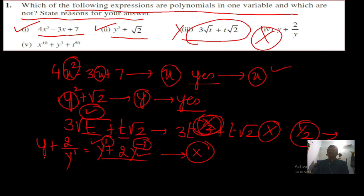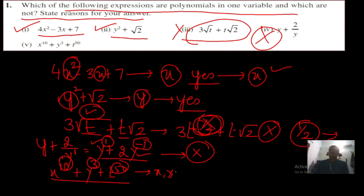The next expression is x raised to 10 plus y cubed plus t raised to 50. Yes, this is a polynomial and the degrees are all whole numbers, natural numbers. But the problem is there are 3 variables — x, y, and t. So it is a polynomial, but it is not a polynomial in one variable; it is a polynomial in 3 variables.